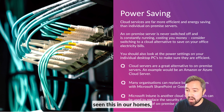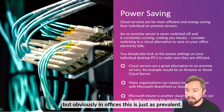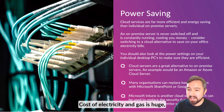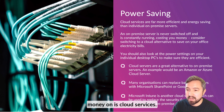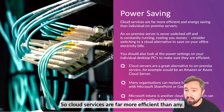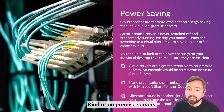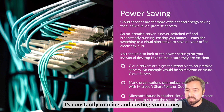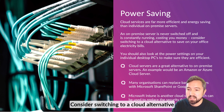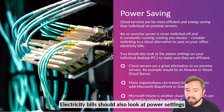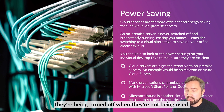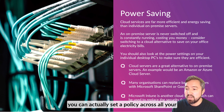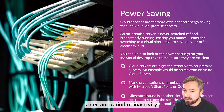Power saving. We've all probably seen this in our homes, but in offices this is just as prevalent — the cost of electricity and gas is huge. One of the big ways of saving money is through cloud services, which are far more efficient than any kind of on-premise servers. Anything on-premise is not switched off — it's constantly running and costing you money. Consider switching to a cloud alternative to save on your office electricity bills. You should also look at power settings on your individual desktop PCs to make sure they're being turned off when not in use. If you use something like Microsoft Intune, you can set a policy across all your devices to turn off the power after a certain period of inactivity.